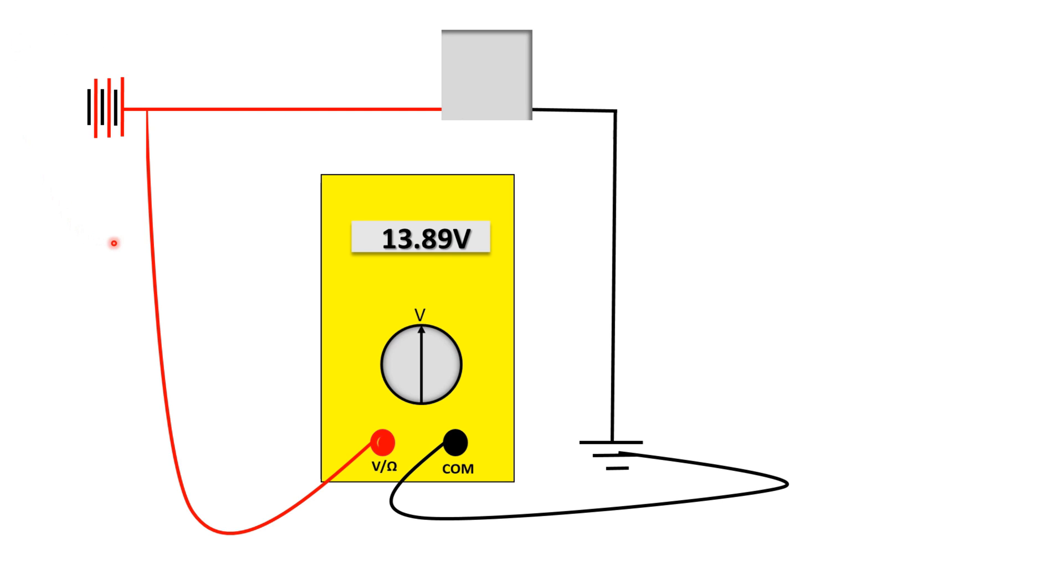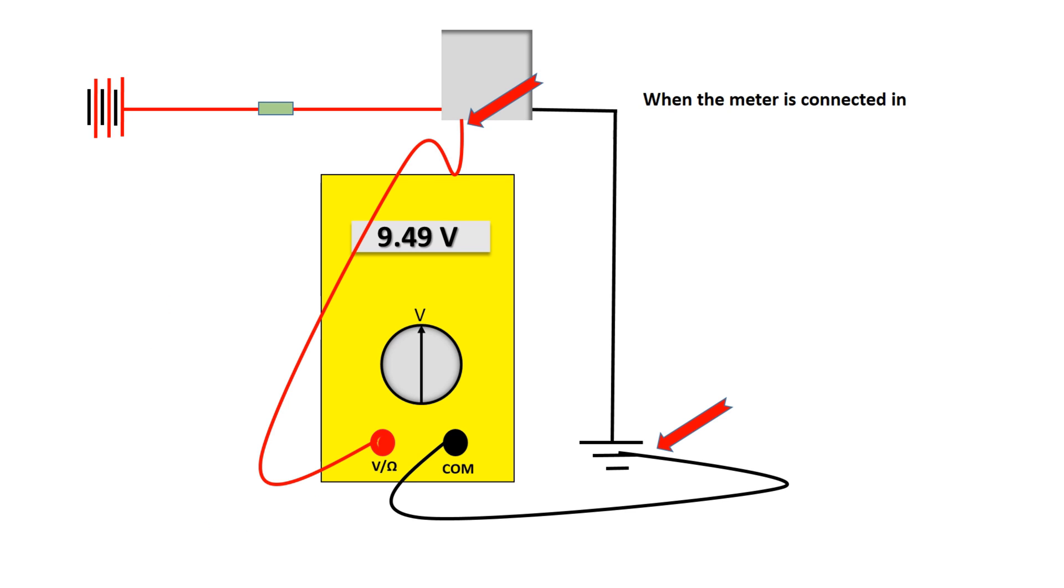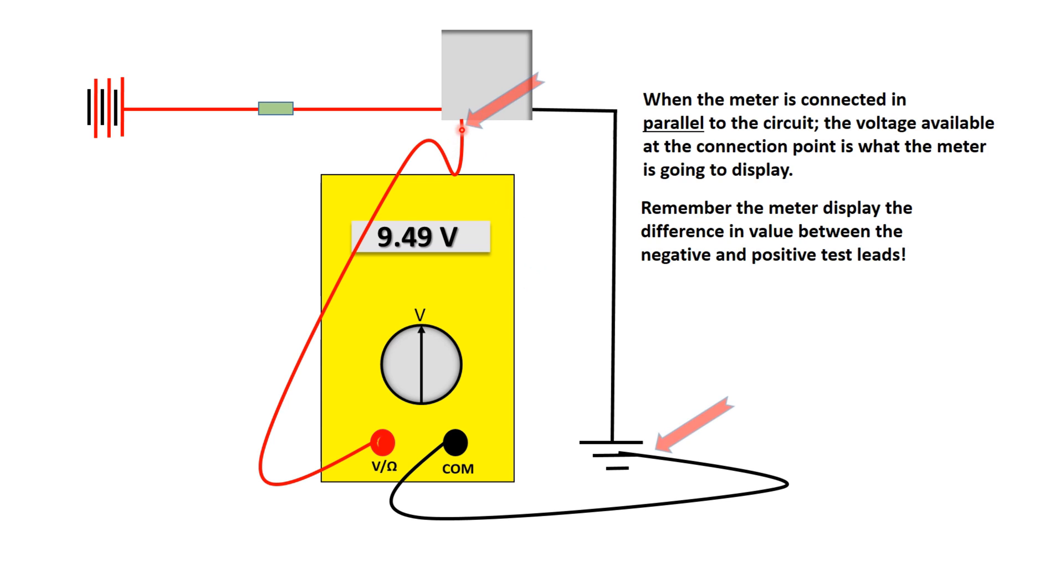Now why is it that we get a different reading when we back probe than when we did the open circuit voltage measurement? Well one of the things you have to remember is that to read voltage you place the meter in parallel to the circuit. And when the meter is connected in parallel, it's going to show you whatever voltage is available at the point that you connect it to. Keep in mind that what your meter is showing you is the difference in value or the difference in voltage between the two meter leads. So if I have a battery that's 13.89 volts but I'm only getting 9.5 volts here, I know that I have a problem somewhere in between on this wire.